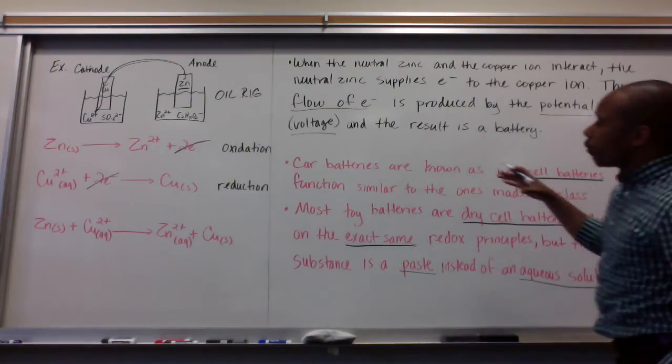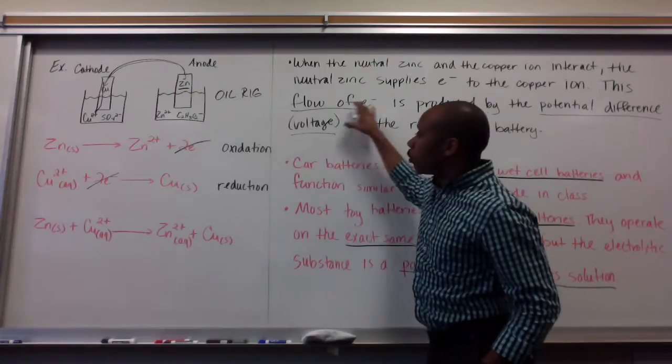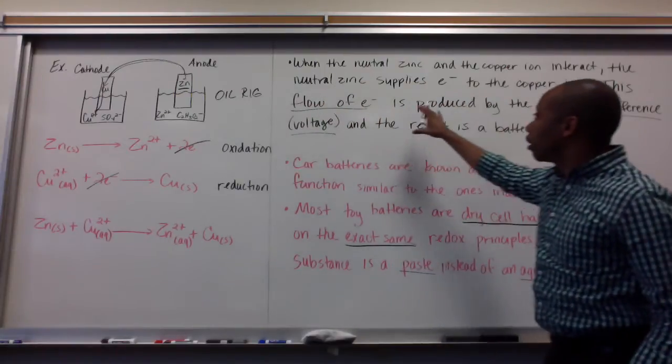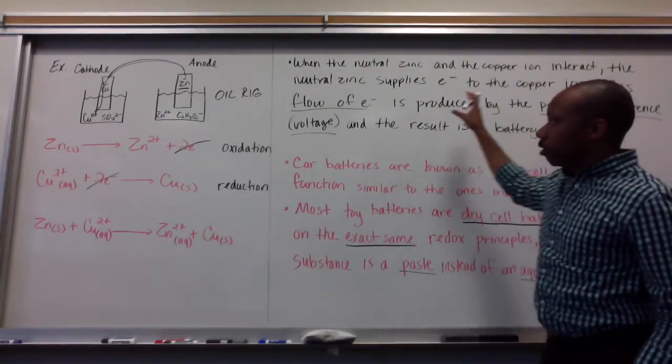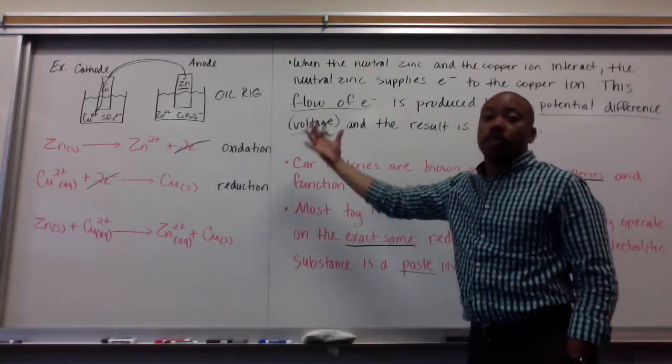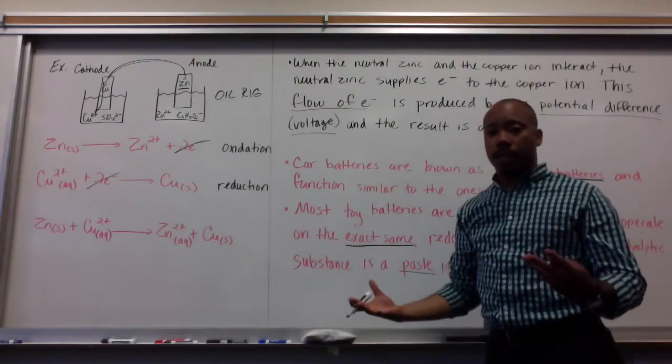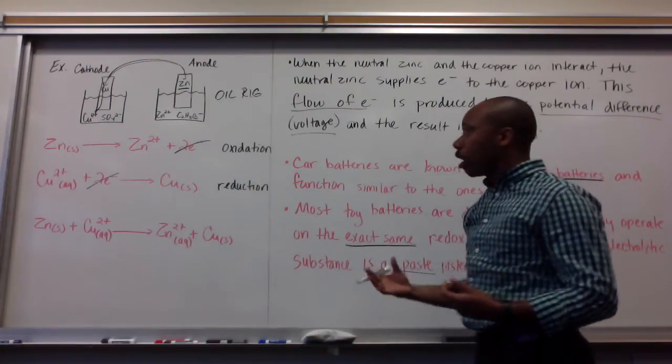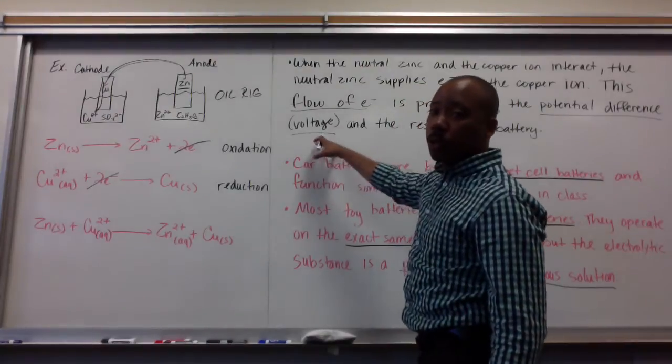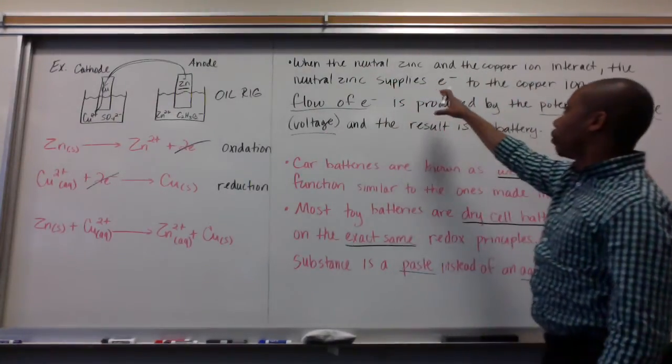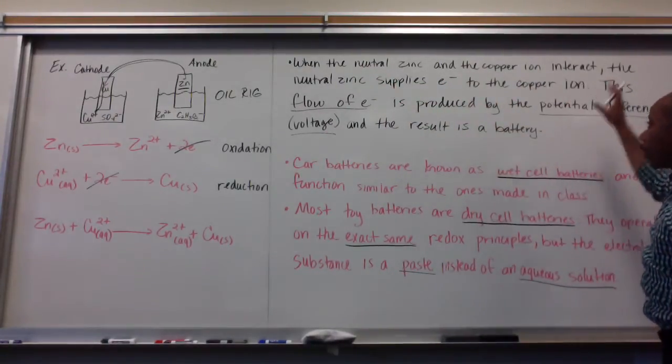We get a flow of electrons where we produce a current when the potential difference comes into play, when we have our two different metals there. We produce current when there is voltage. And that voltage happens due to zinc supplying electrons to the copper ions.